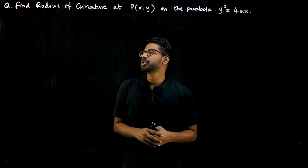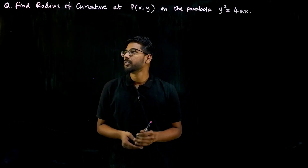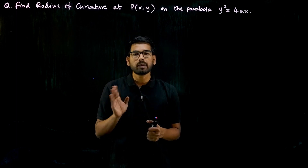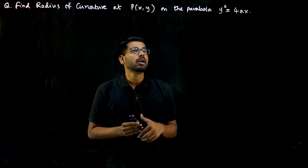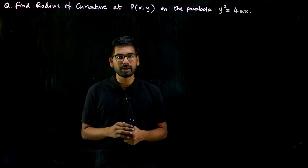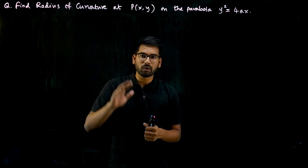Hey guys, we have the next question here from the first module. That is: find the radius of curvature at point P on the parabola y² = 4ax. This is the radius of curvature formula.